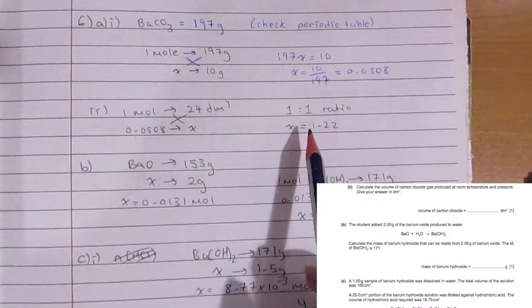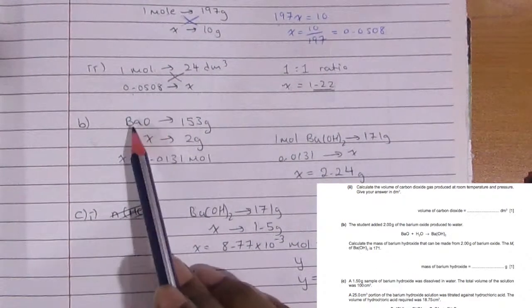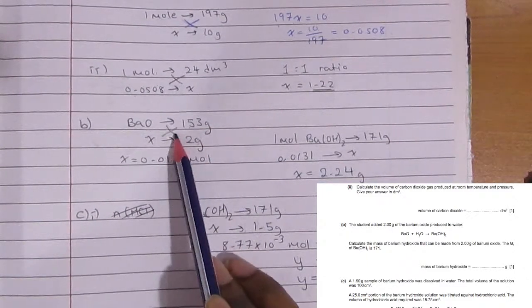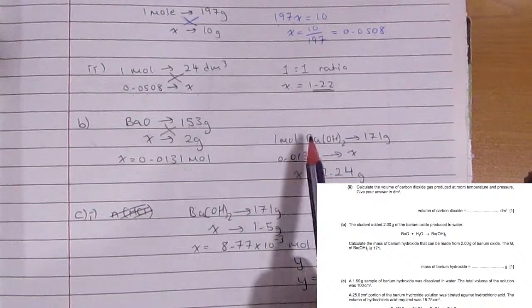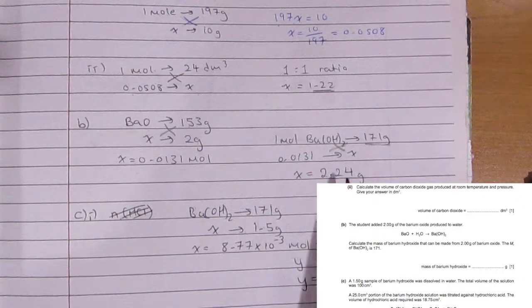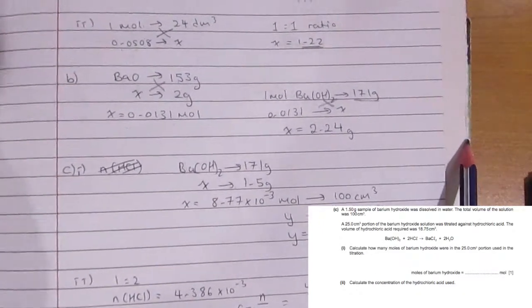Then for the second part it's a one-to-one ratio, so you get one carbon dioxide and one barium carbonate. So one mole in room temperature and pressure is 24 decimeter cubed for any gas, so that many moles will give you how many decimeter cubed? Cross multiply, it will give you 1.22. Now barium oxide is 153 grams, we want 2 grams, that will give us 0.0131 moles.